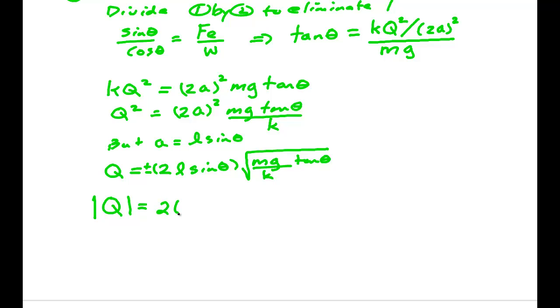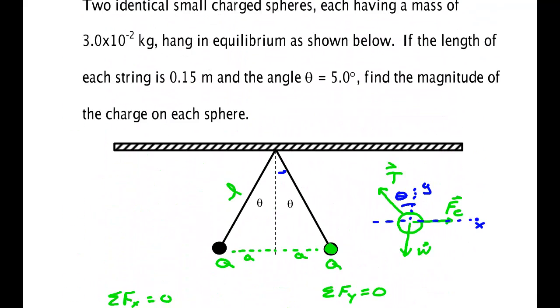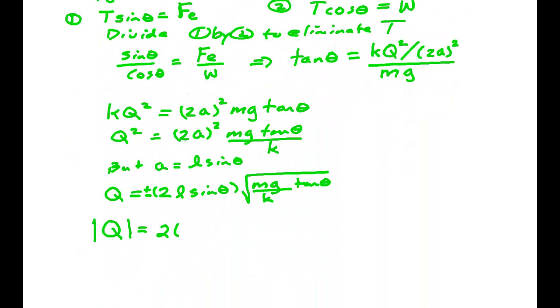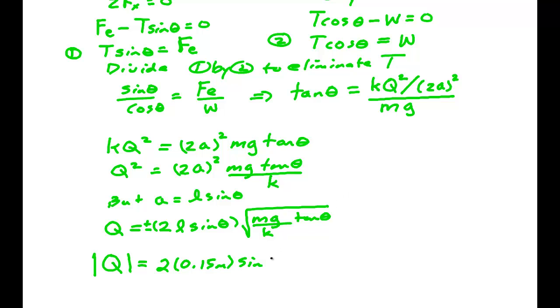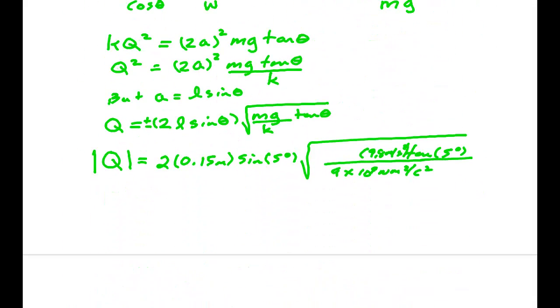So looking at the magnitude, I have 2 times the length. The length was 0.15 meters. Times the sine of the angle. The angle I believe was 5 degrees. Times the square root. On the bottom here, 9×10⁹ newton meters squared per coulomb squared. On the top I have tan of 5 degrees. I have 9.8 meters per second squared. And I have M. M was 3×10⁻² kilograms.